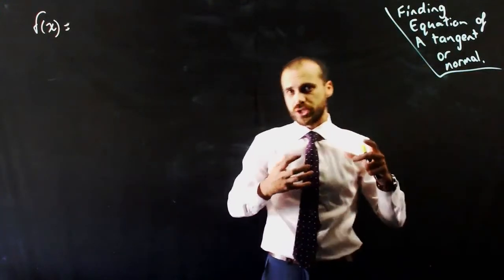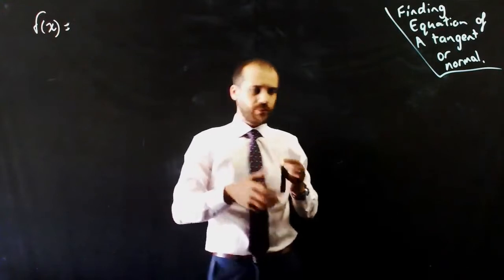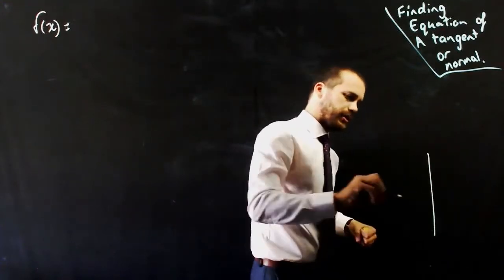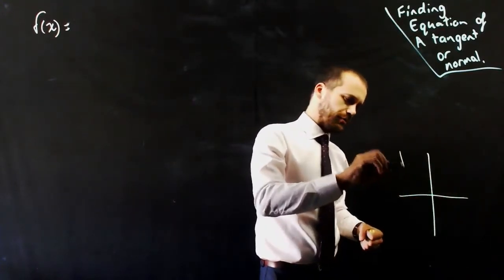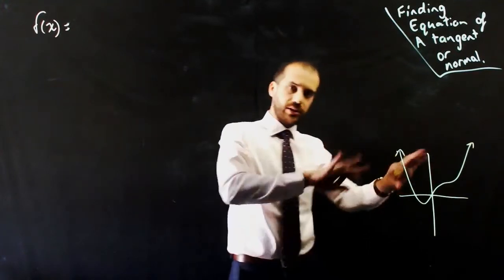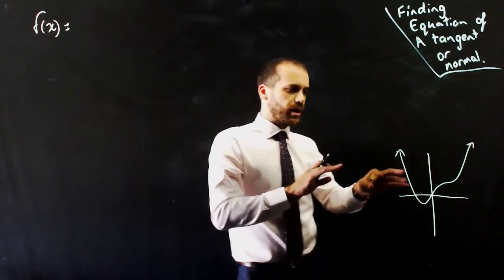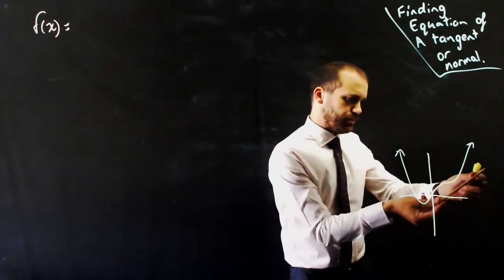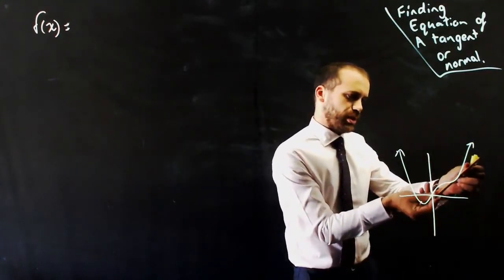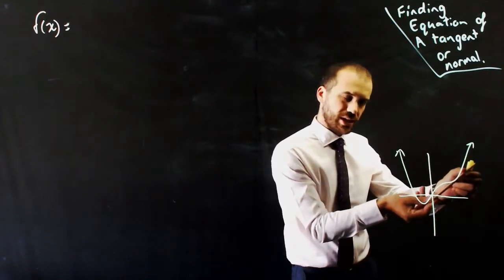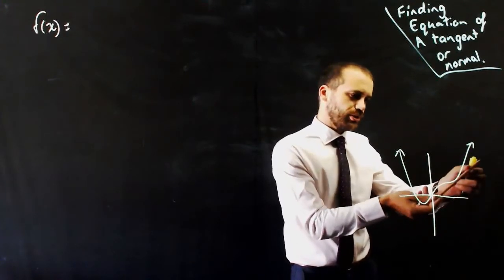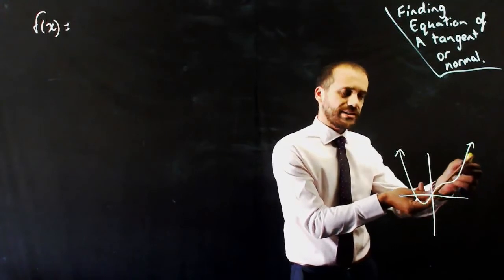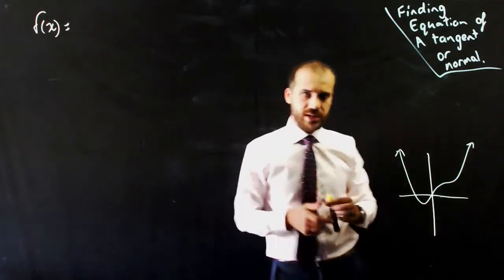Alright, so I'm going to find the equation of a tangent. What that roughly looks like - say I've got some funky looking graph. I'm going to find a line that touches the graph, just touches it, doesn't pass through it at multiple points, just passes through it at a single point. And that is a tangent.